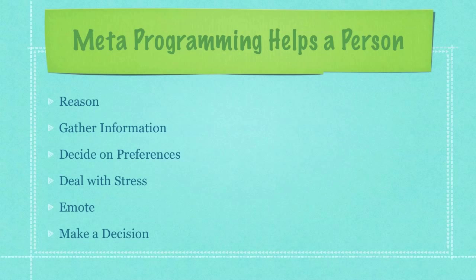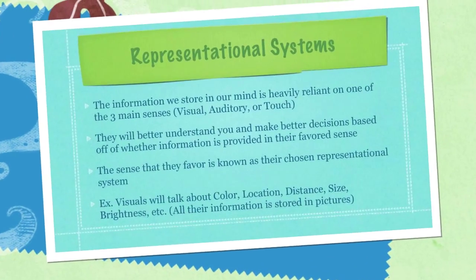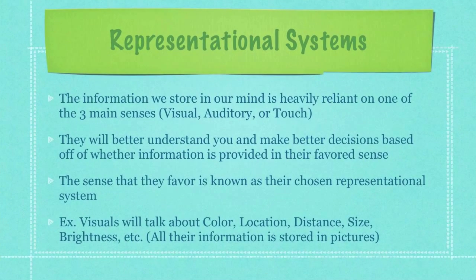Metaprogramming, for example, helps a person reason, gather information, decide on preferences, deal with stress, emote, and make decisions. The information we store in our mind is heavily reliant on one of three main senses — being either visual, auditory, or touch or feeling. If you're talking to someone, they will better understand you and make better decisions based on whether the information is provided in their favored sense. The sense that they favor is known as their chosen representational system.